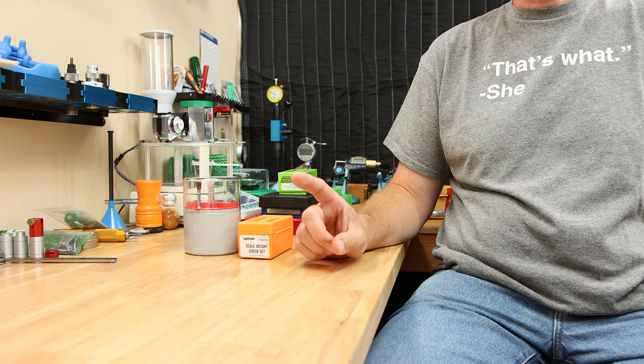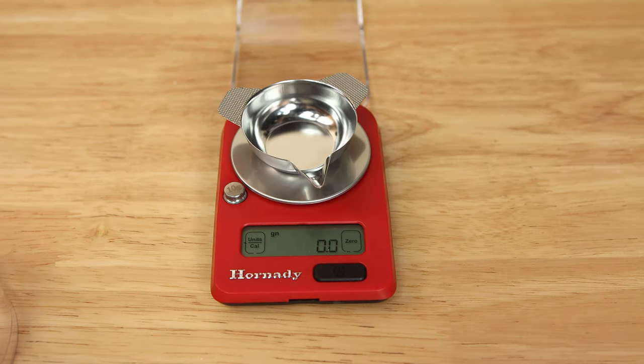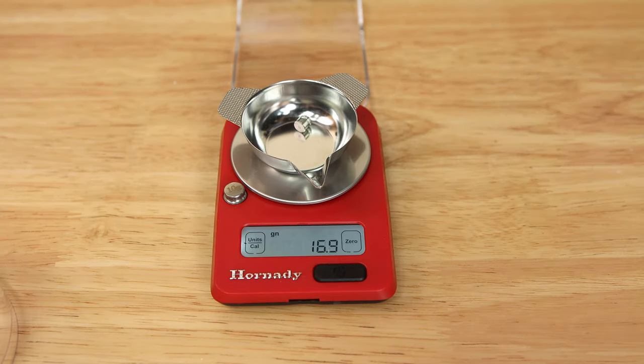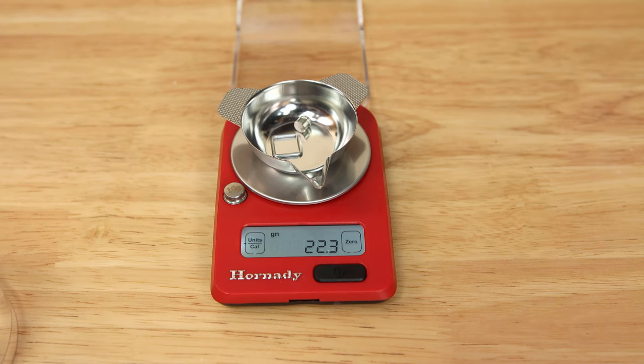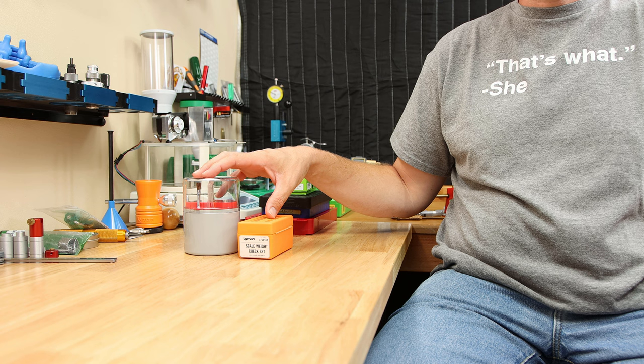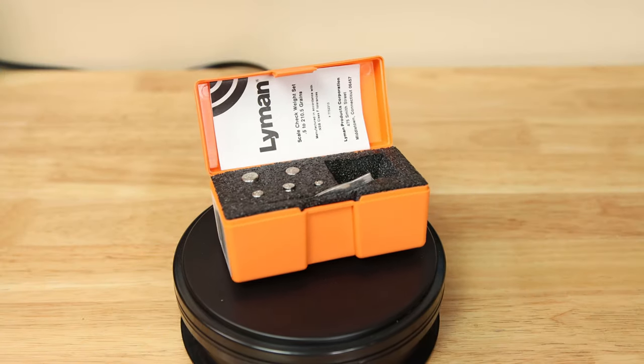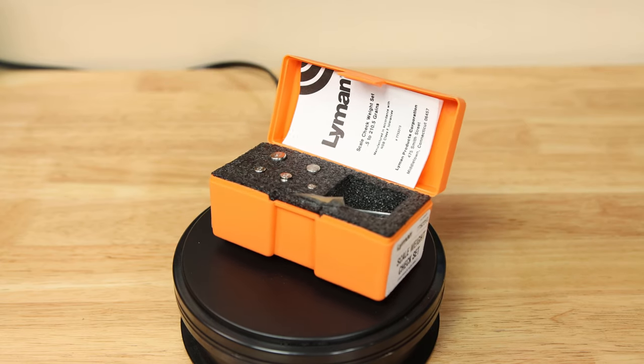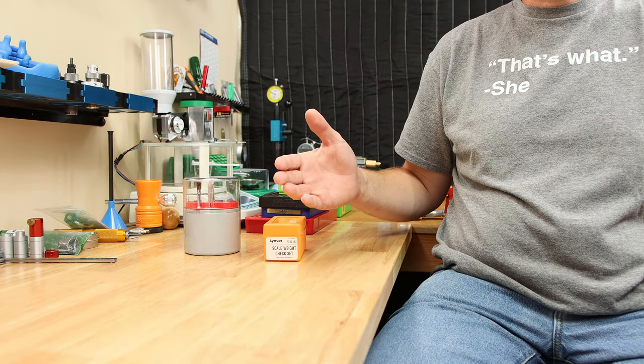The first tool we'll talk about today are check weights. I don't care if your scale is $50 or $500. Having a set of check weights to be able to validate your reloading scale is very important, and they can be had for not a ton of money. Now, this particular Lyman set right now is running around $46. It was a lot less when I bought it, but there are alternatives.